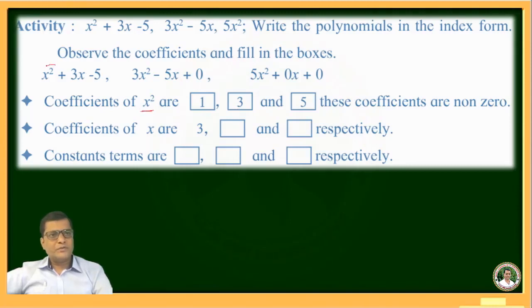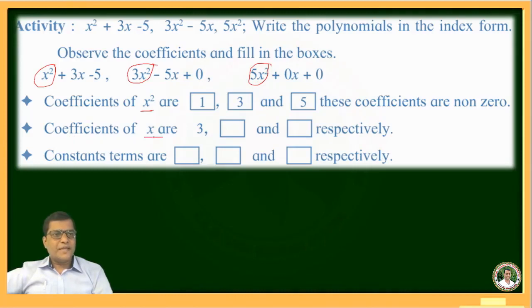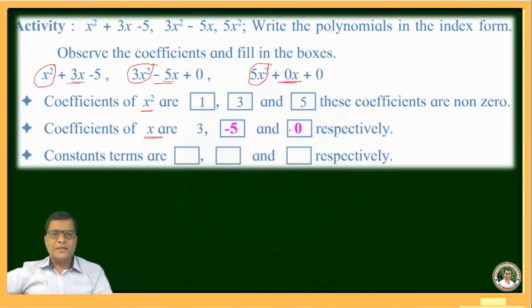The coefficient of x² in the first polynomial is 1, in the second is 3, and in the third is 5. The coefficients of x are: 3 in the first polynomial, −5 in the second (so −5 goes in that box), and 0 in the third polynomial.